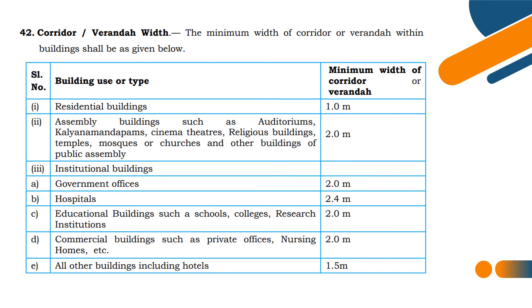Rule 35 is planning parameters for non-high-rise buildings — we will have some table values for this. Rule 42 deals with corridors and verandas. The minimum width of corridor or veranda within buildings: for residential buildings, minimum width is 1 meter; for hospitals, 2.4 meters; for all other buildings including hotels, 1.5 meters. This table is important for Rule 42 corridor or veranda width.